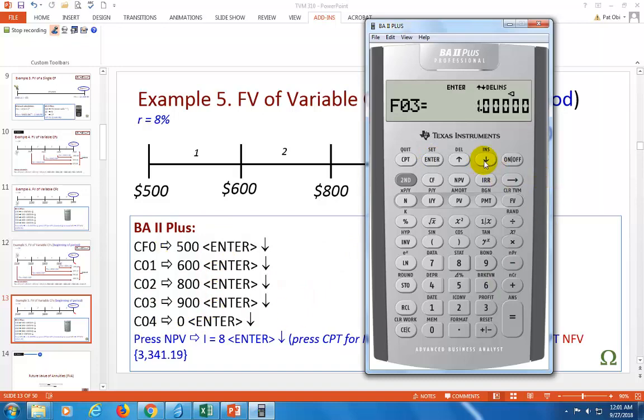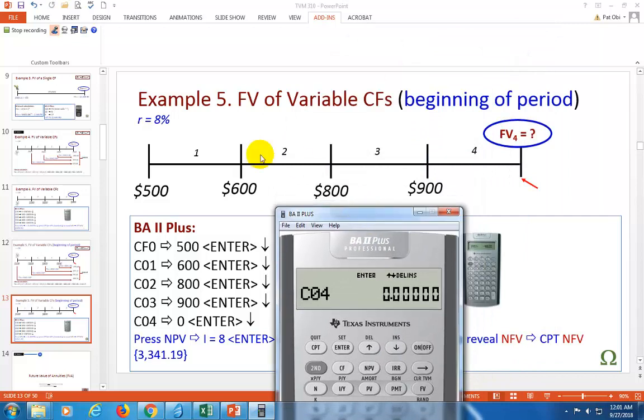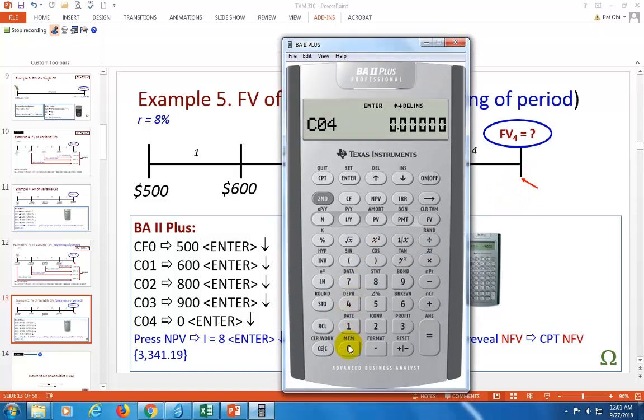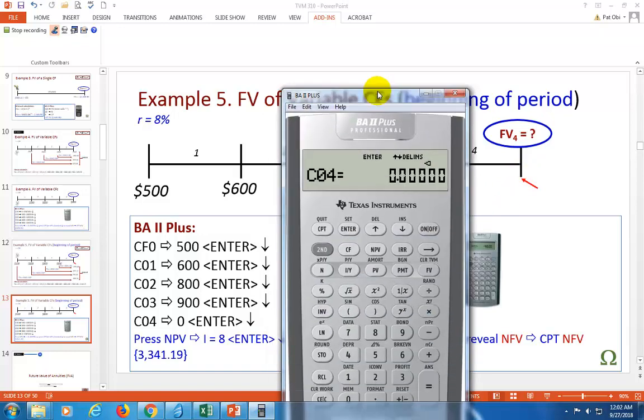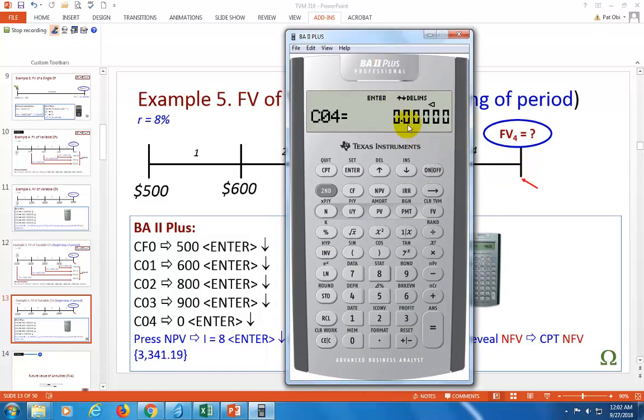Now we're going to have to go to C4. Keep in mind that this is a four-year investment. Even though we have no cash flow here, we need to actually make an entry of zero for time period four. Because if you do not, the system will assume that what you have is a three-year investment, since the last cash flow you entered was C3. Make sure the system knows this is a four-year investment by entering zero and enter.